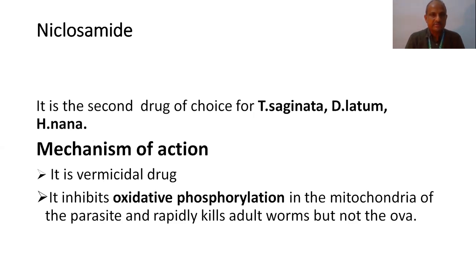One more important drug is niclosamide. It is the second drug of choice for Taenia saginata, Diphyllobothrium latum, and Hymenolepis nana. Coming to the mechanism of action of niclosamide: it is mainly a vermicidal drug — vermicidal means killing the worms. It inhibits oxidative phosphorylation in the mitochondria of the parasite and rapidly kills adult worms, but is not effective in killing the ova.